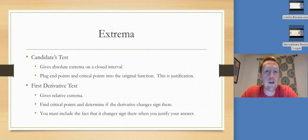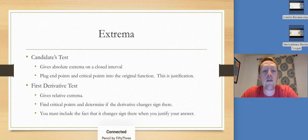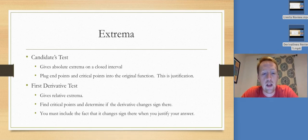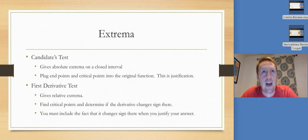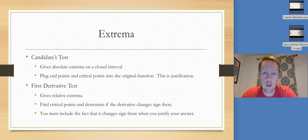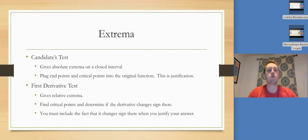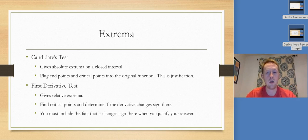Remember, AP graders will not look at your sign chart. It is not sufficient justification. You have to say the derivative changes sign at this particular x value — positive to negative for a max, negative to positive for a min. You have to say that; you have to write a sentence. It's very important that you do that.